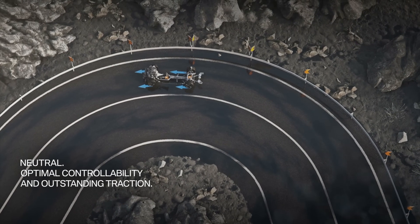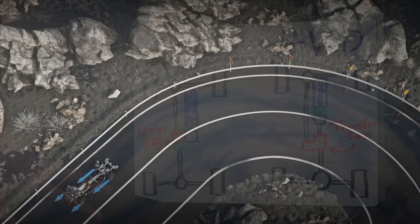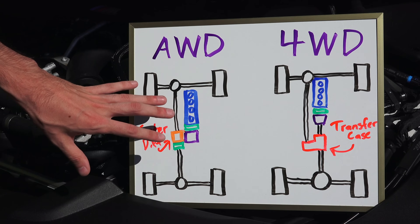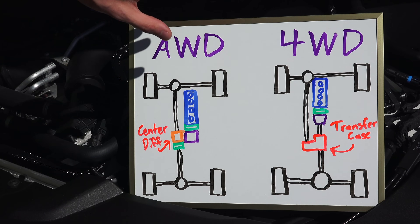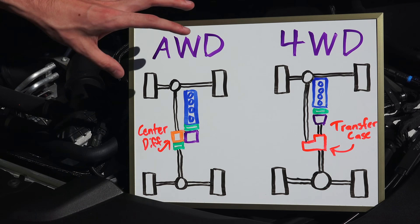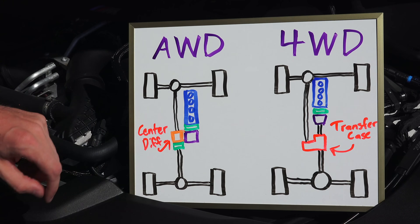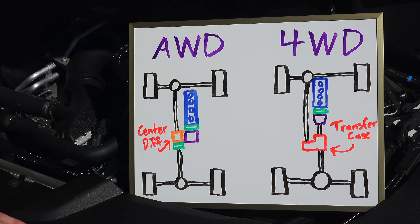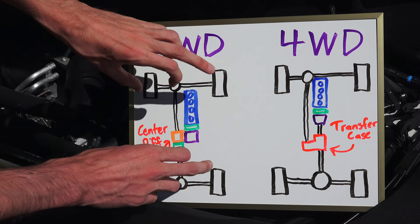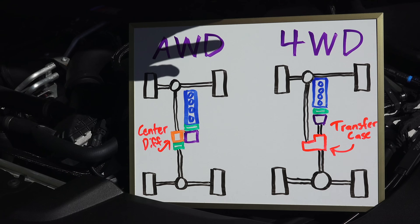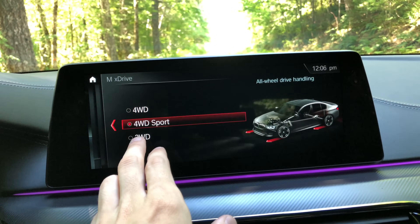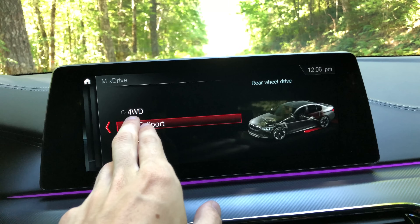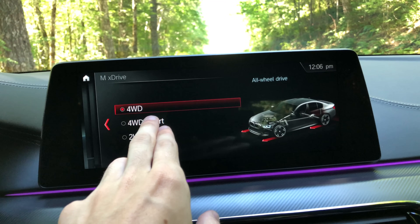In all-wheel drive, your center differential is going to be sending that power to one of the axles pretty much all the time, and then you'll have another clutch pack which can choose to redirect that torque to the other axle — so it could be the front or the rear. Traditionally you're going to have it be front-wheel drive and then send torque to the rear differential as needed. The big difference between these two is that with all-wheel drive, the driver isn't choosing what's happening — the system itself is always determining where it wants to send that torque. With four-wheel drive, using this transfer case, the driver actually chooses: do I want to send power just to the rear wheels, or also to the front wheels?